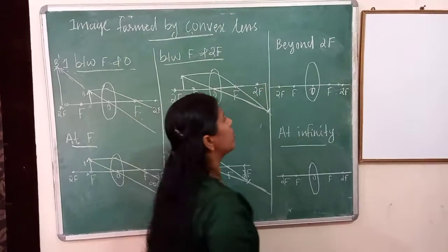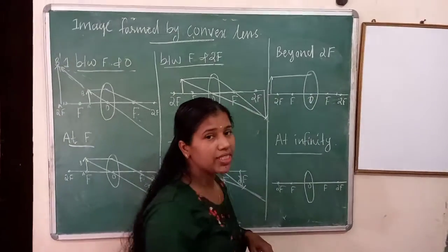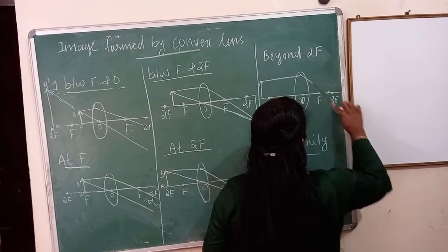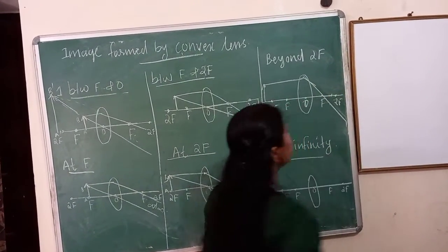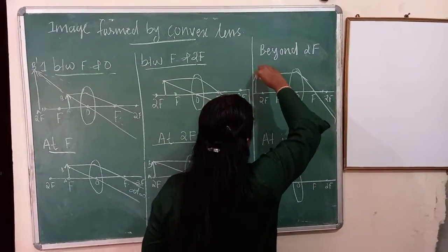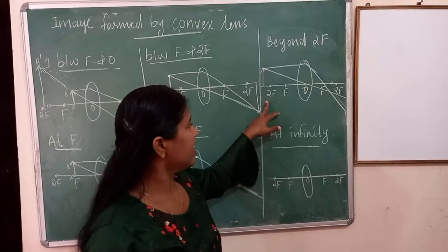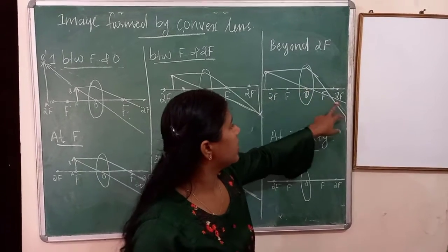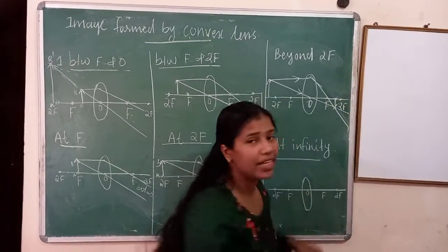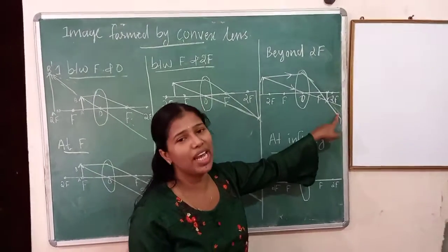Fifth case: object is beyond 2F. Object AB is placed beyond 2F. A ray parallel to the principal axis passes through the focus after refraction. A ray through the optical center goes straight. The image is formed between F and 2F on the other side of the lens.